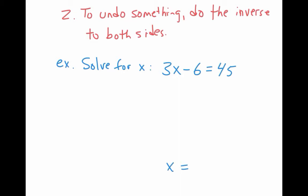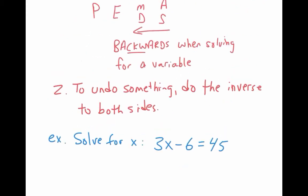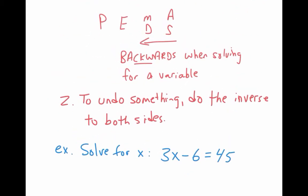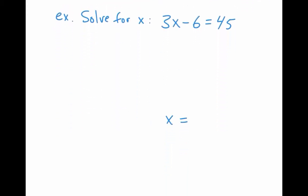So first step, if we go back to our rules, is we have to do order of operations backwards. So we're going to start out by doing adding and subtracting. So the 6 is connected by subtraction, so we need to plus 6. So I'm going to add 6. To keep it equals, if I add 6 to the left, I have to add 6 to the right.